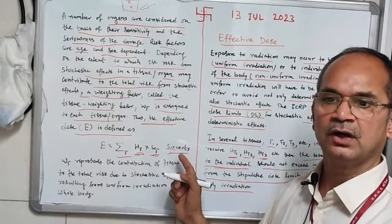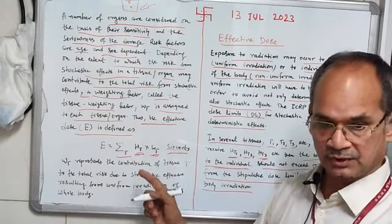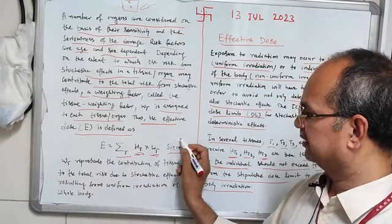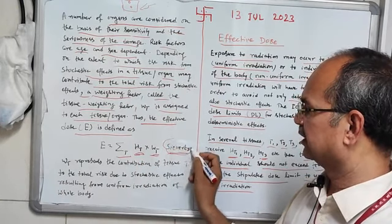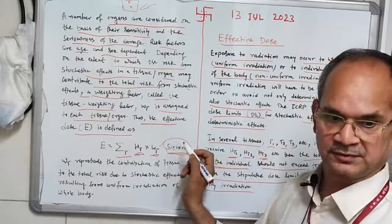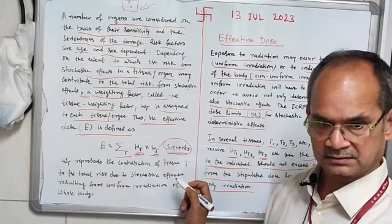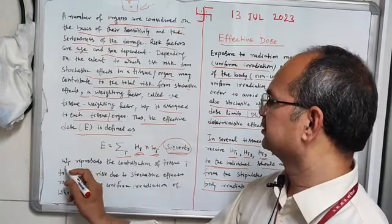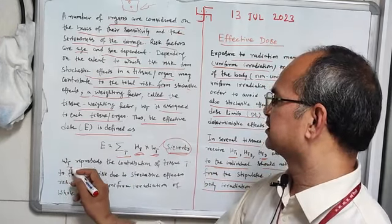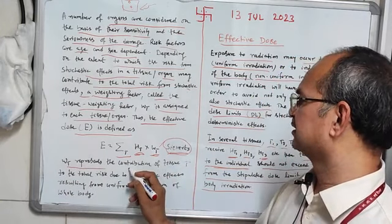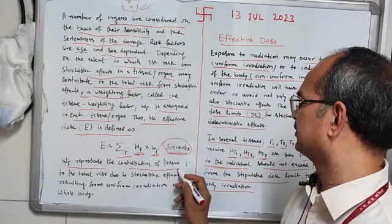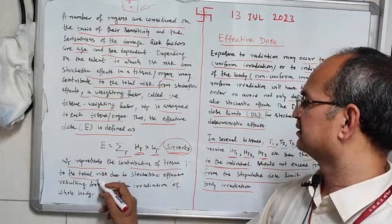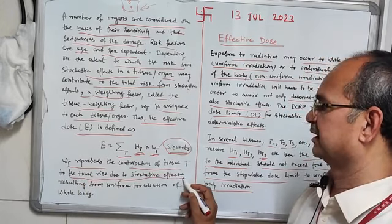Finally, the absorbed dose gives joule per kilogram, and the final unit becomes sievert. In this equation, W_T represents the contribution of tissue T to the total risk due to stochastic effects resulting from uniform irradiation of the whole body.